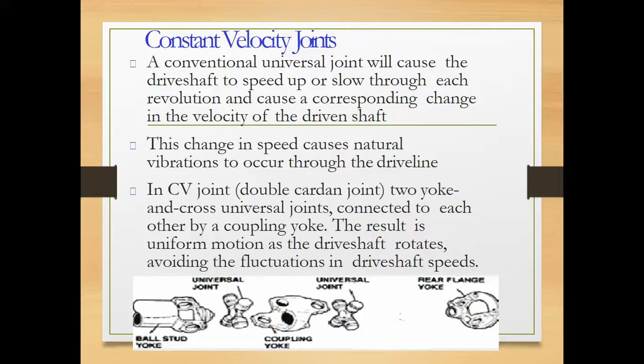A conventional universal joint will cause the drive shaft to speed up or slow down through each revolution and cause corresponding changes in the velocity of the driven shaft. This change in speed causes neutral vibration to occur through the drive line. In a CV joint or double cardan joint, two yokes and two cross universal joints are connected to each other by a coupling yoke. This results in uniform motion as the drive shaft rotates, avoiding fluctuation in driving speed. As you can see in the figure, we have a ball stud yoke, universal joint, coupling yoke, universal joint, and rear flange yoke.